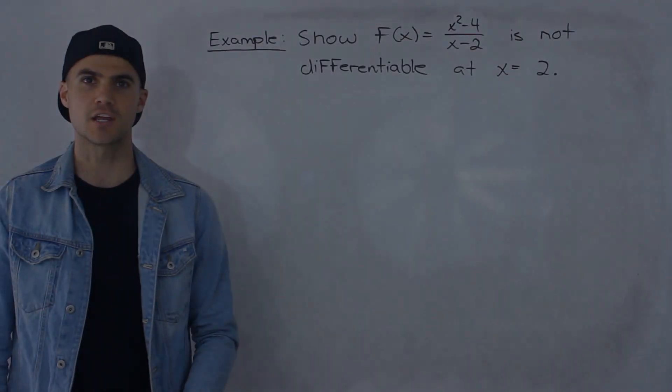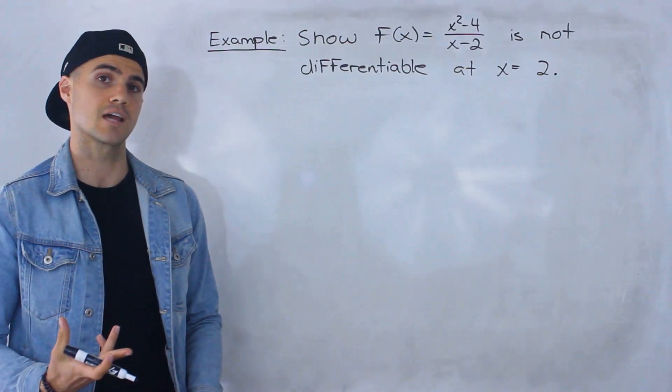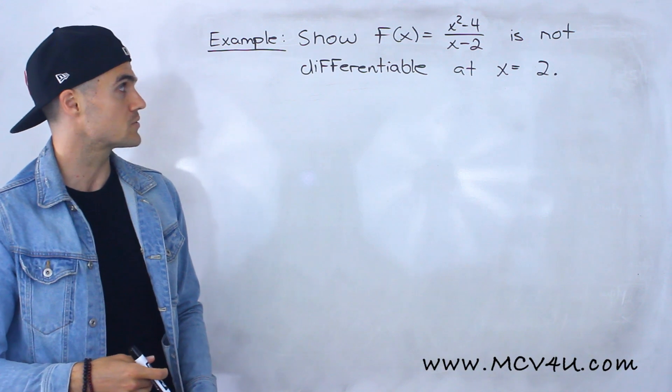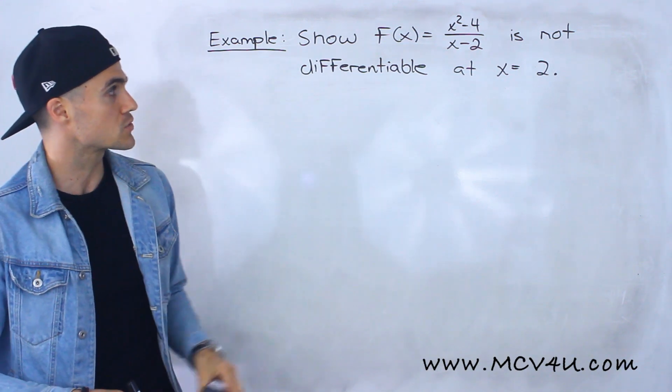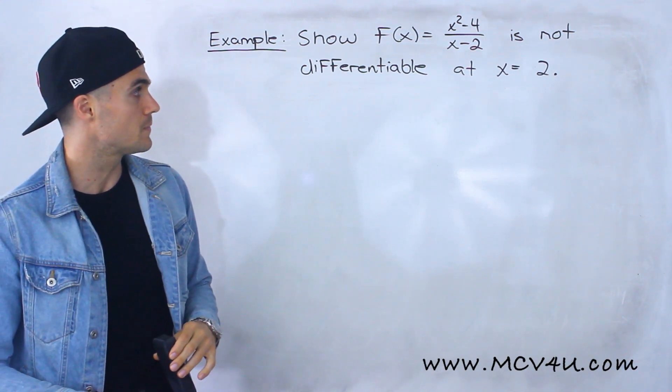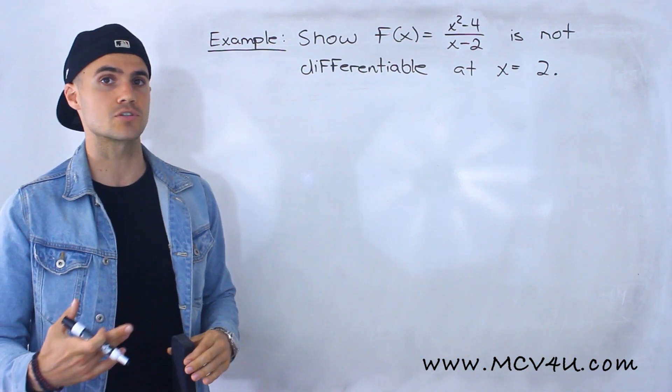What's going on everyone? Welcome back. Patrick here. I'm moving on to the next example dealing with differentiability. So we have to show that f of x equals x squared minus 4 over x minus 2 is not differentiable at x equals 2.